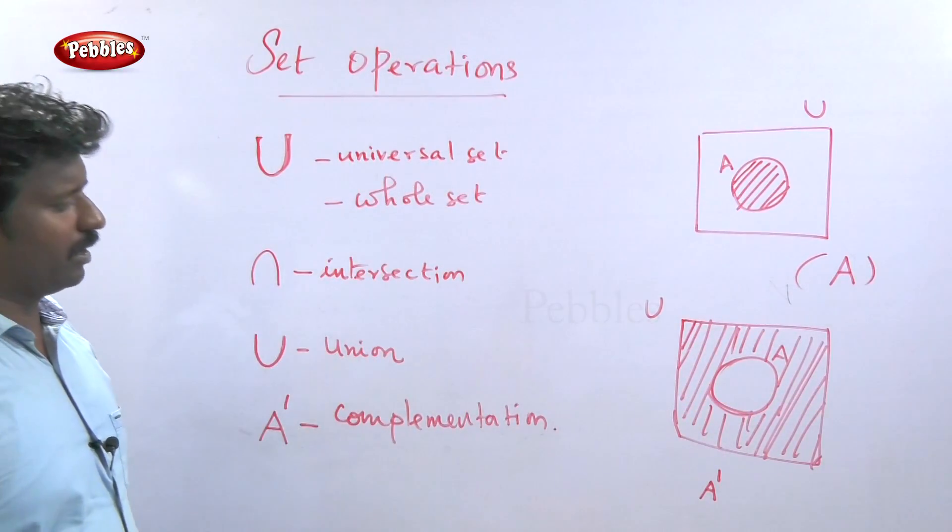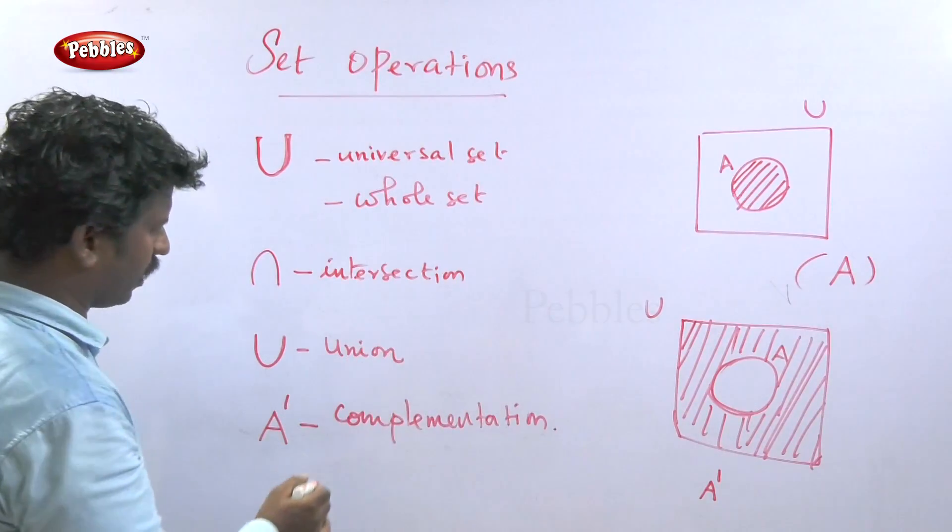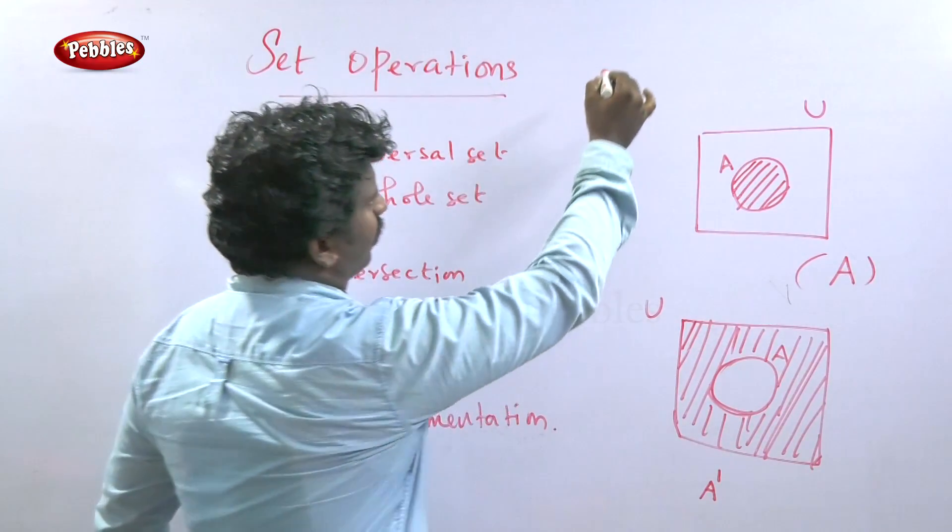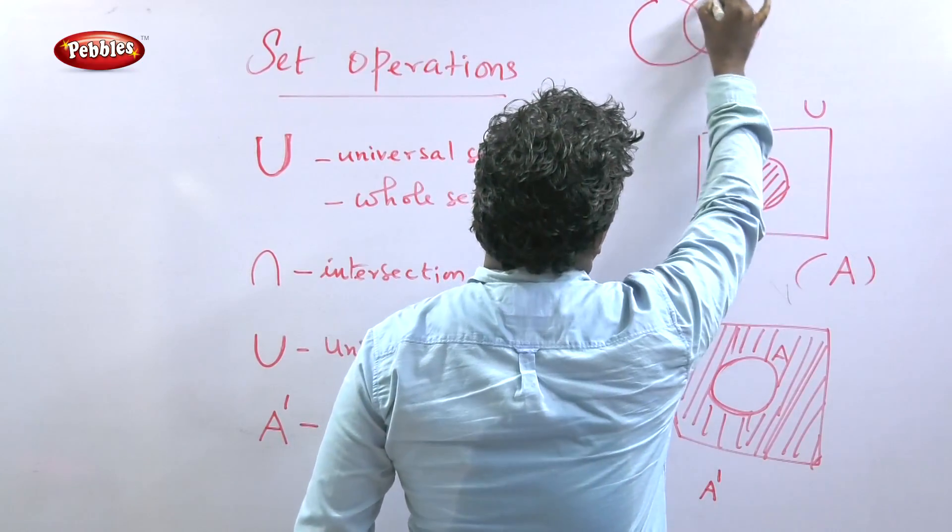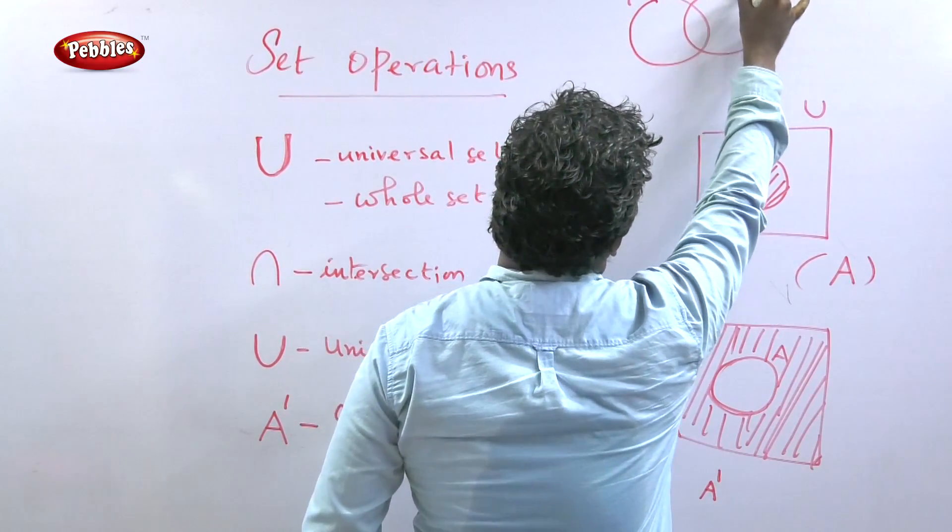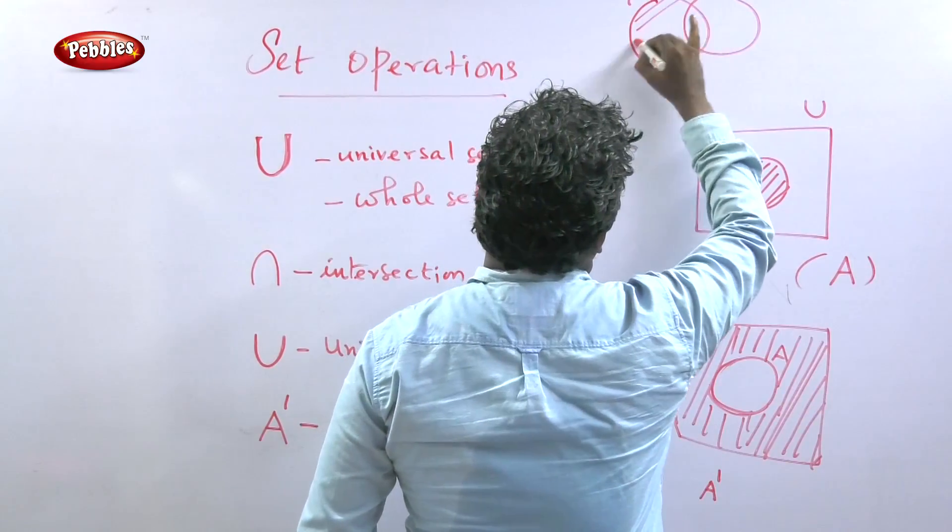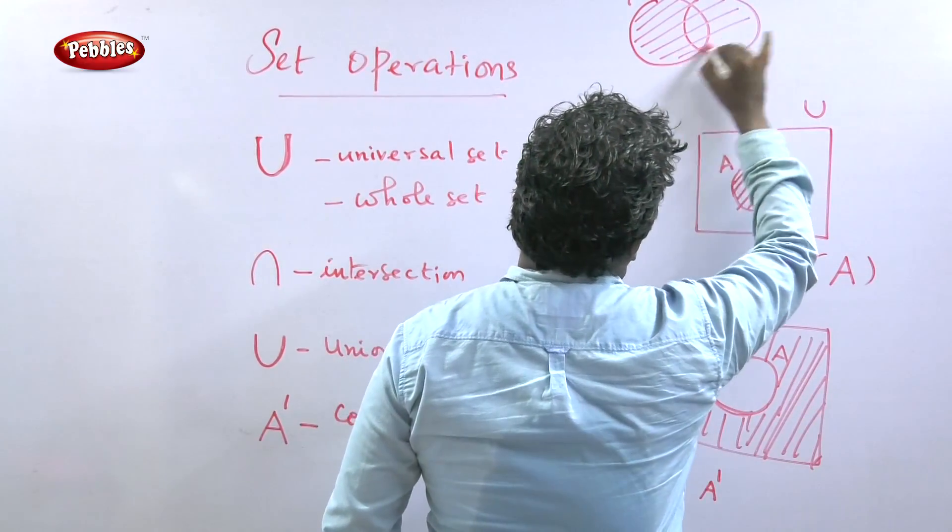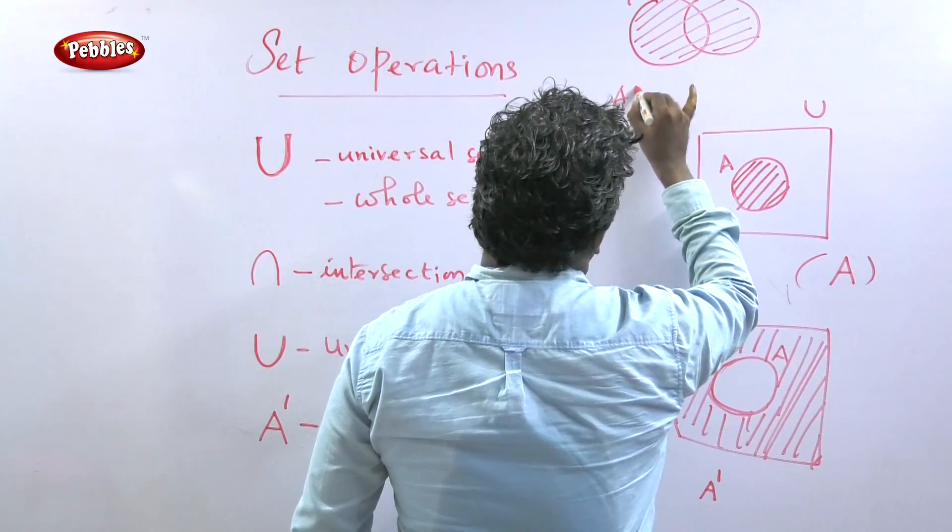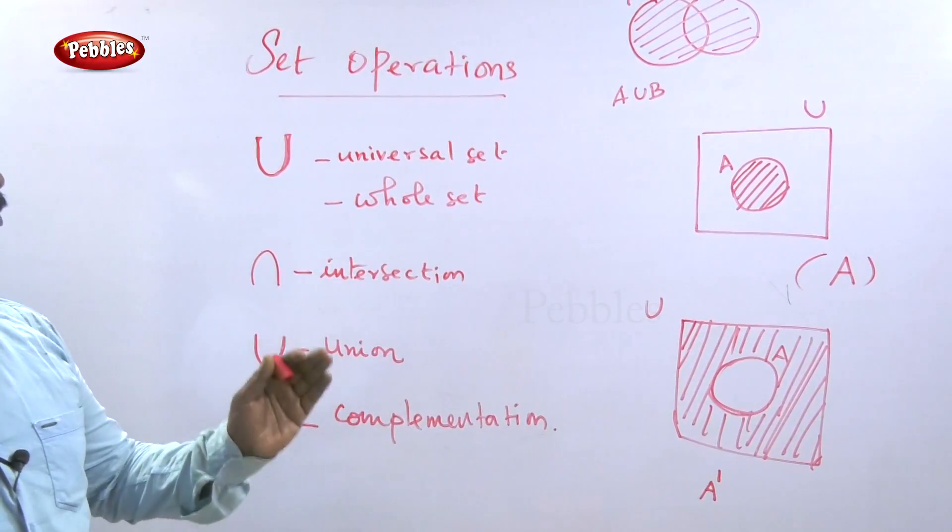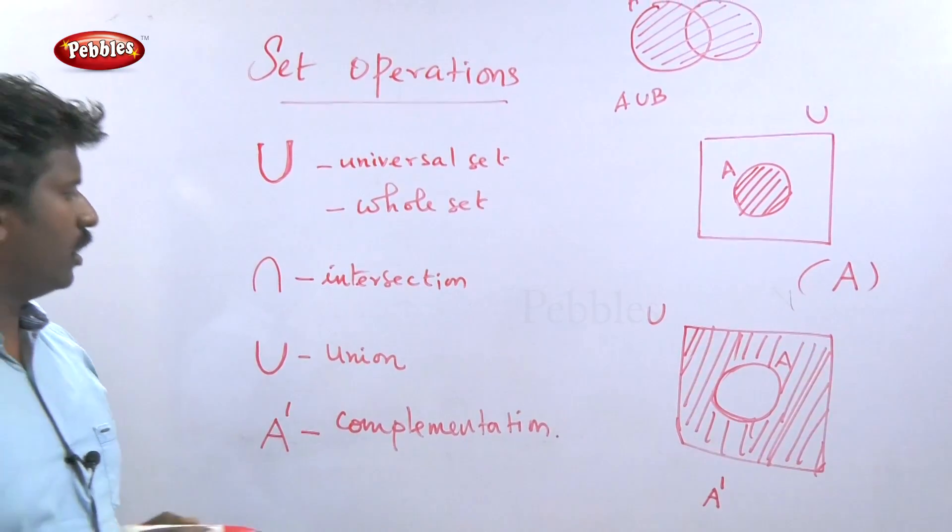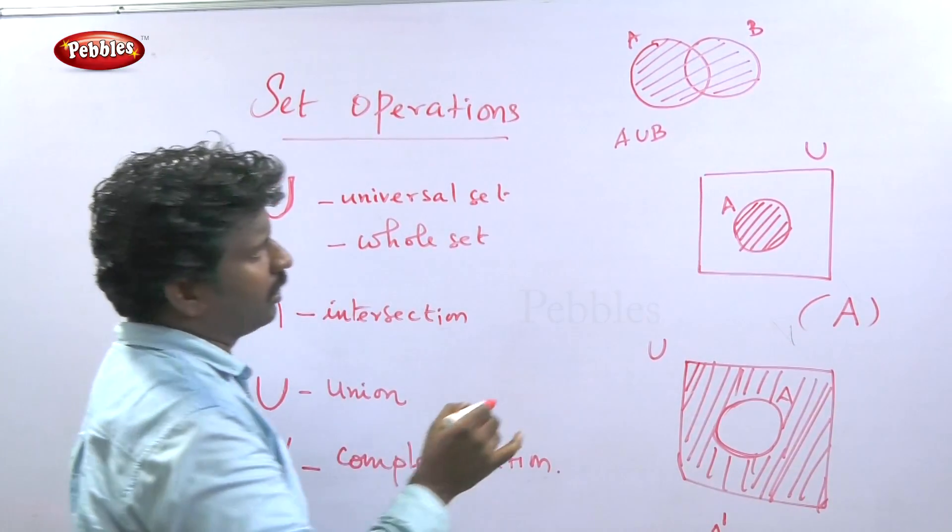Union means when we are taking two sets. This is set A and this is set B. When we join them together, this is A union B.